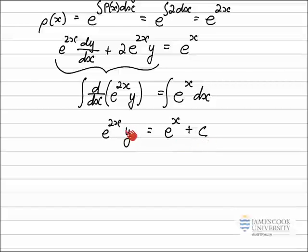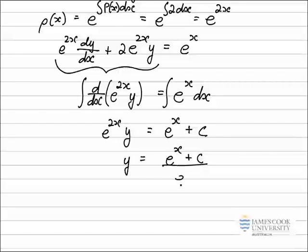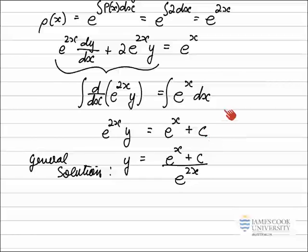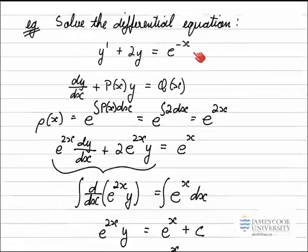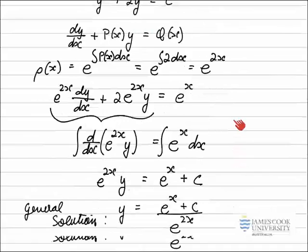The last stage is to rearrange to get the general solution with y by itself. Dividing both sides by e^(2x), I'm left with y = (e^x + C) / e^(2x). That is the general solution to the differential equation. Without any additional conditions, that's as far as we can go — the general solution to the first-order differential equation using the integrating factor.